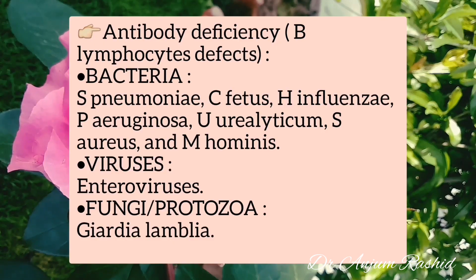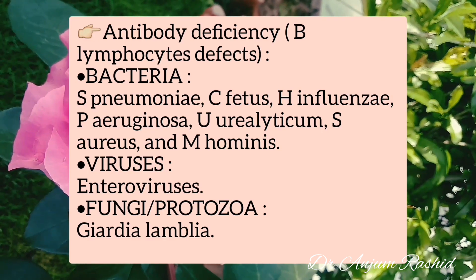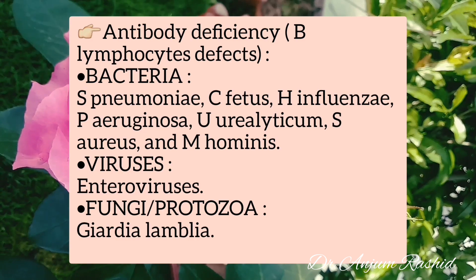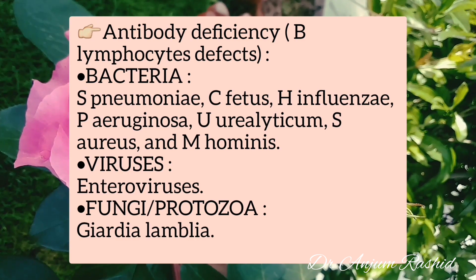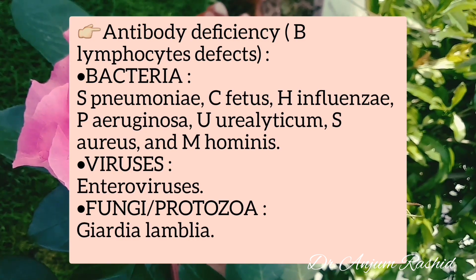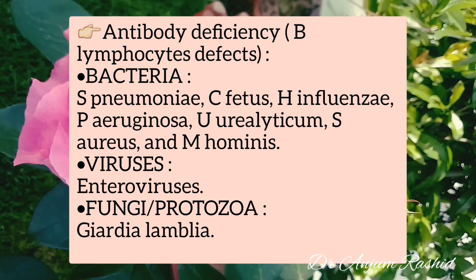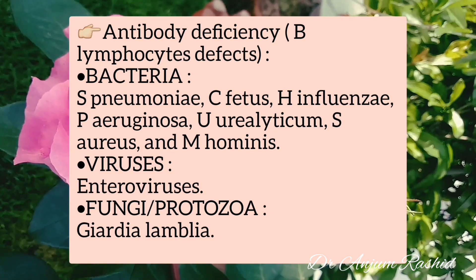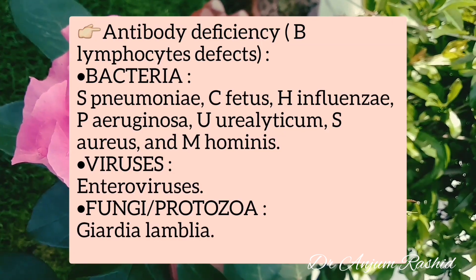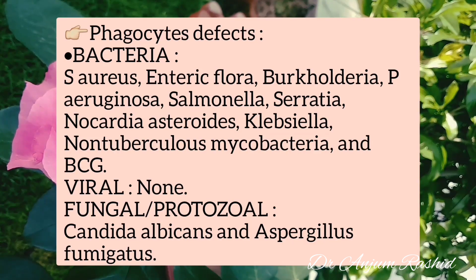In antibody deficiency, bacterial infections are more common, though viral, fungal, and protozoal infections also occur. Bacterial infections include Streptococcus pneumoniae, Campylobacter fetus, Haemophilus influenzae, Pseudomonas aeruginosa, Ureaplasma urealyticum, Staphylococcus aureus, and Mycoplasma hominis. Enteroviruses and Giardia lamblia also cause infections in this category.